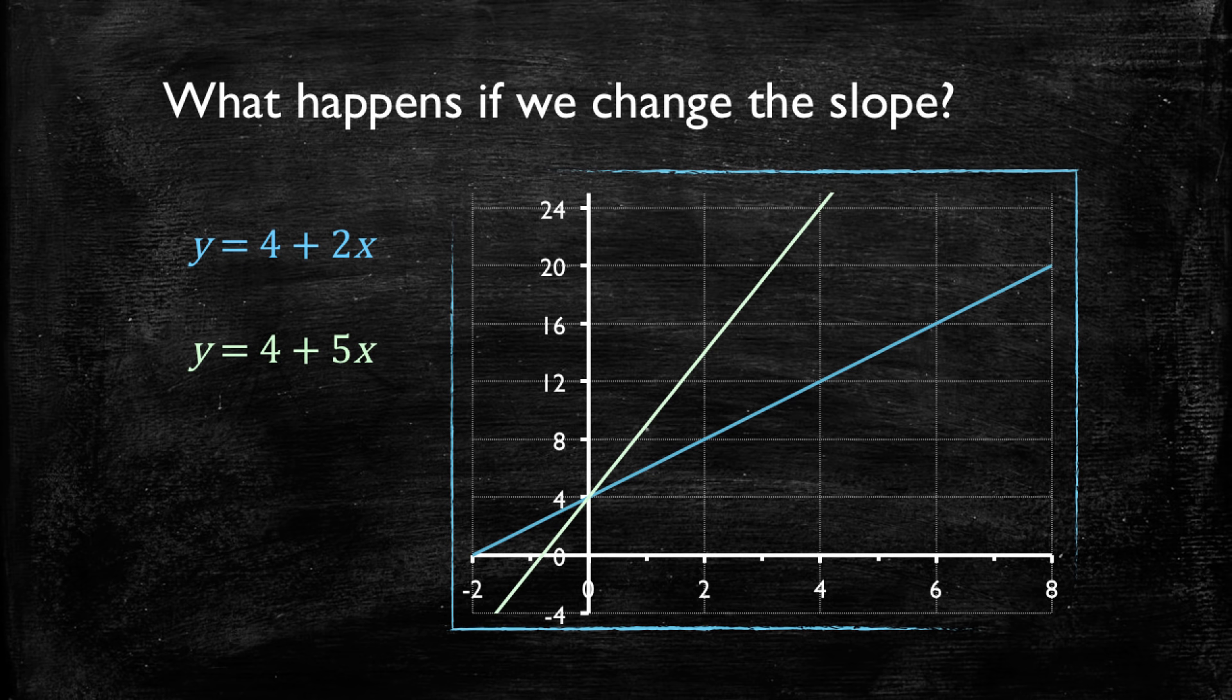What would happen if we had a zero slope? This would mean that it doesn't matter what value x has, y will always be four.